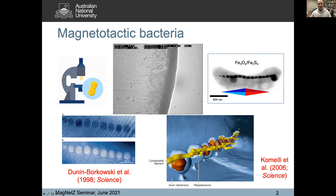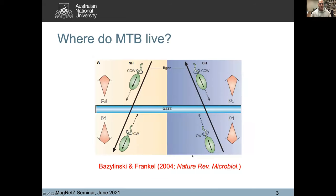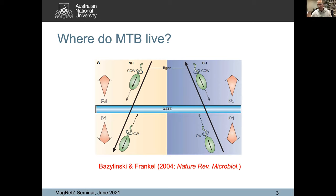The standard view of where these things live is that they live around oxic-anoxic transition zones, OATZ or OAI. The idea is that going from the atmosphere down into the water column or sediment, you have an oxygen gradient from atmospheric levels to nothing, and an opposing gradient of reduced species — probably sulfur — coming upwards. In between you have a transition zone between oxidizing and reducing environments. I have a problem with this figure at many levels. Dennis and Richard Frankel are legends of the field, but I think this depiction is flawed and it's repeated in the literature.